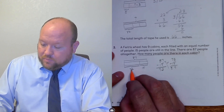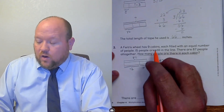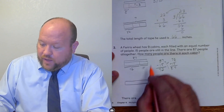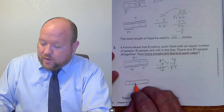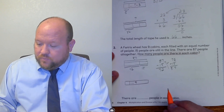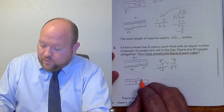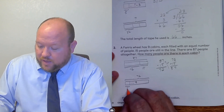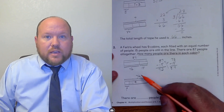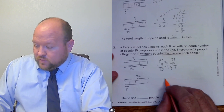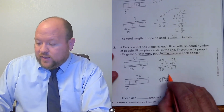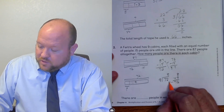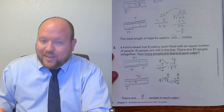Now we know there are 72 people actually on the Ferris wheel. With nine cabins, we need to figure out how many are in each. We'll use another part-whole model — not comparison. There are 72 people total in nine cabins, all with the same number of people. Nine groups of something equals 72, so we use the opposite of multiplication: division. 72 divided by 9 equals 8. We can check: 8 times 9 equals 72. Those check out, meaning there are 8 people in each cabin.